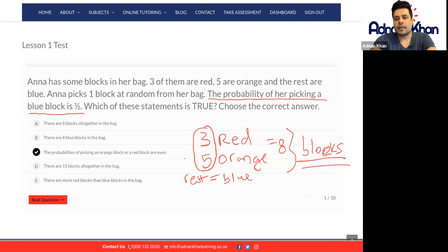That means half in the bag are blue according to the question. So if we have eight blocks which are red and orange and half are blue, how many blue blocks will we actually have? Well we'll have eight.